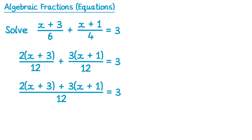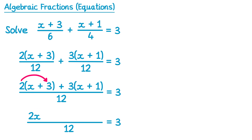Next we need to expand the brackets. So I'm going to write the over 12 and the equals 3, and then we're going to expand the numerator. So we've got 2 lots of x, that's 2x. 2 lots of positive 3, that's positive 6. Then we've got a positive 3 times x, that's positive 3x. And then positive 3 times positive 1, that's positive 3.